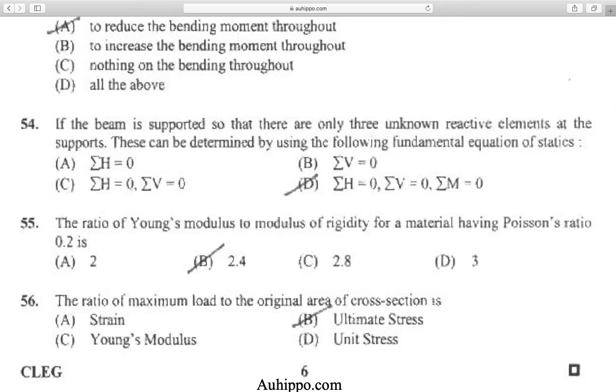Question 55: The ratio of Young's modulus to modulus of rigidity for a material having Poisson's ratio 0.25 is 2.4.